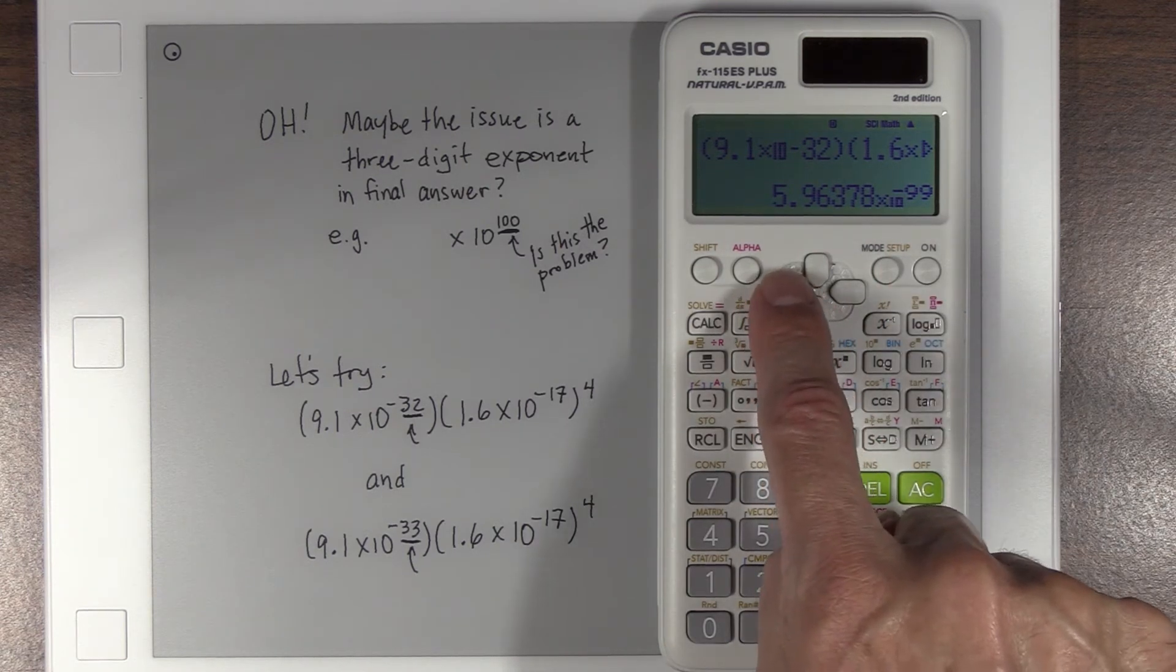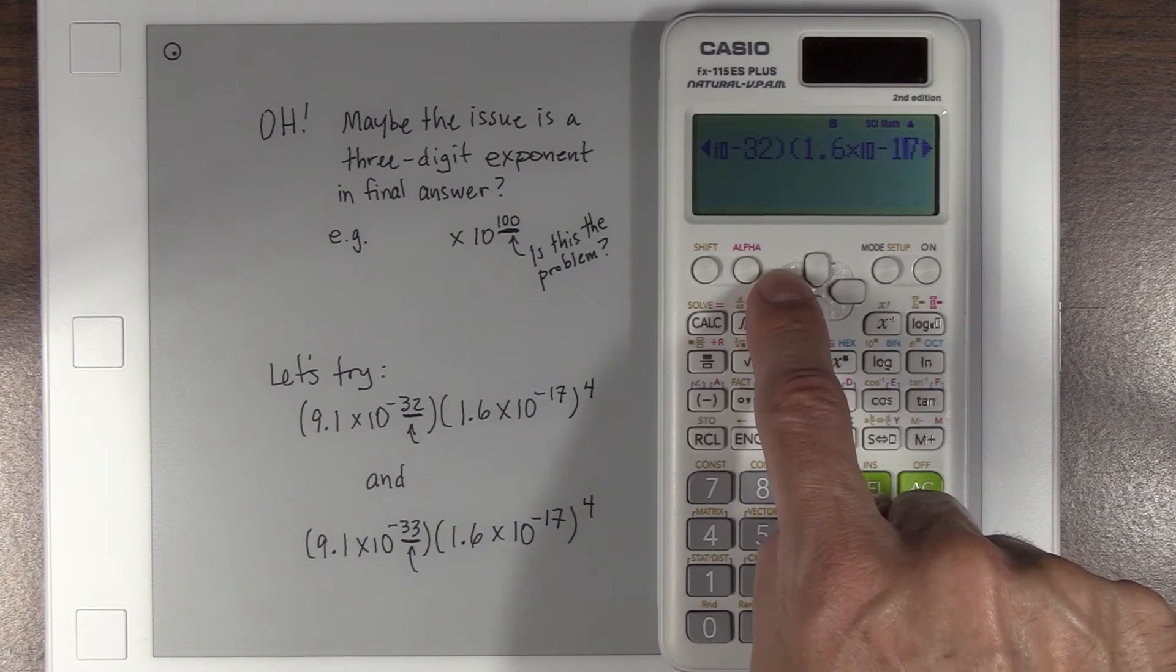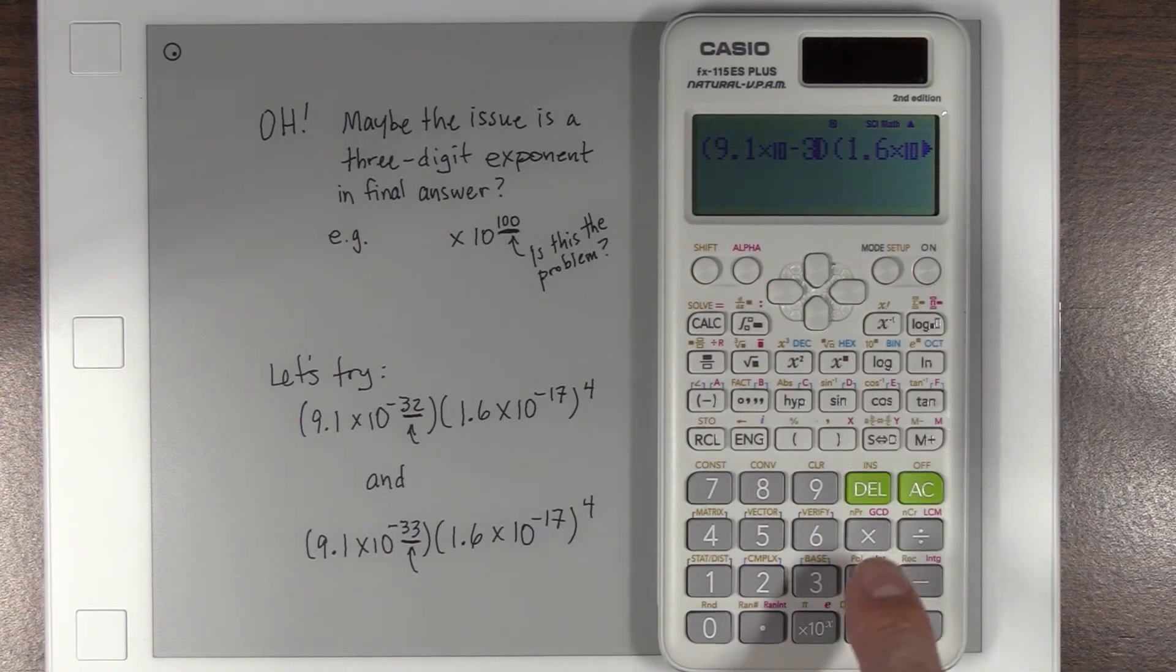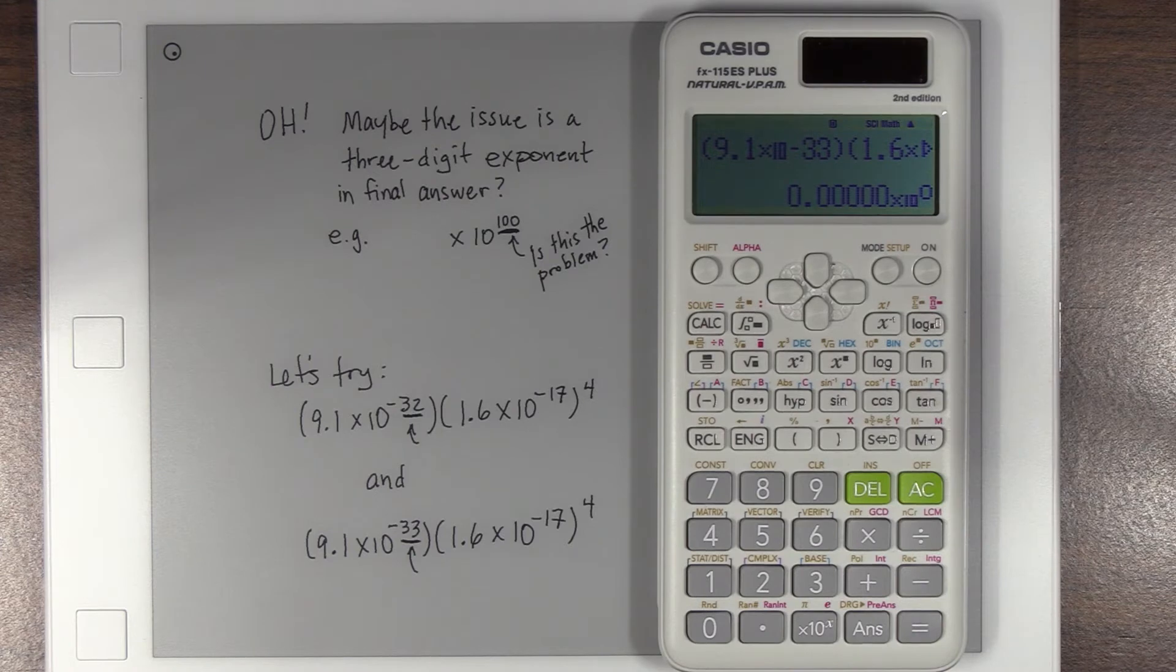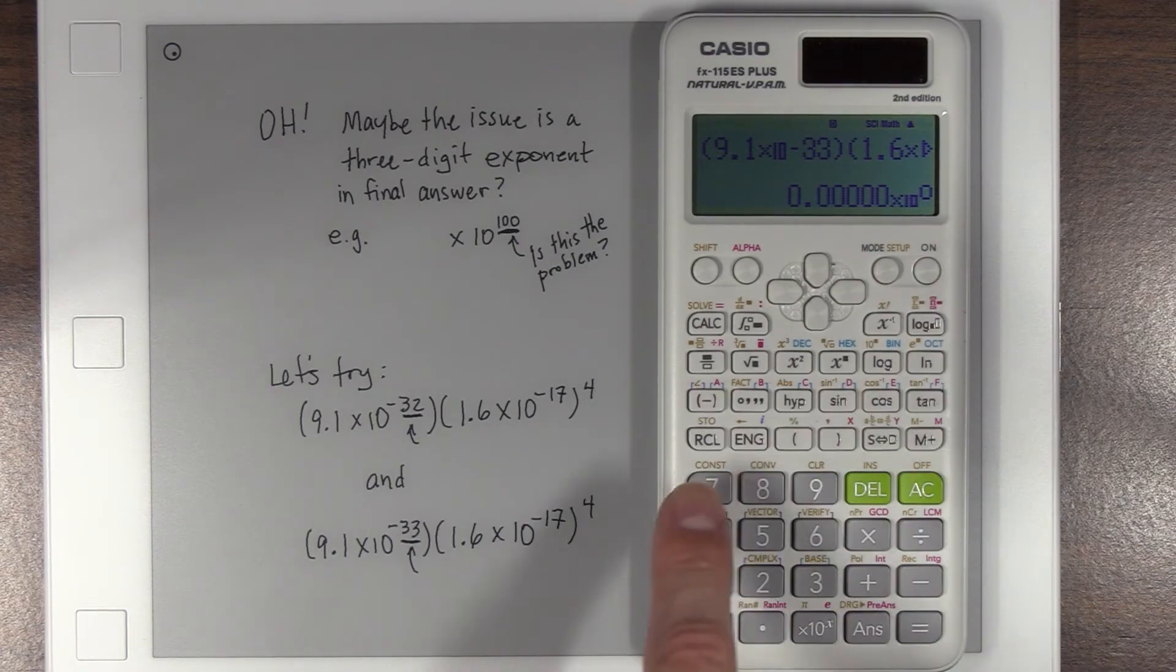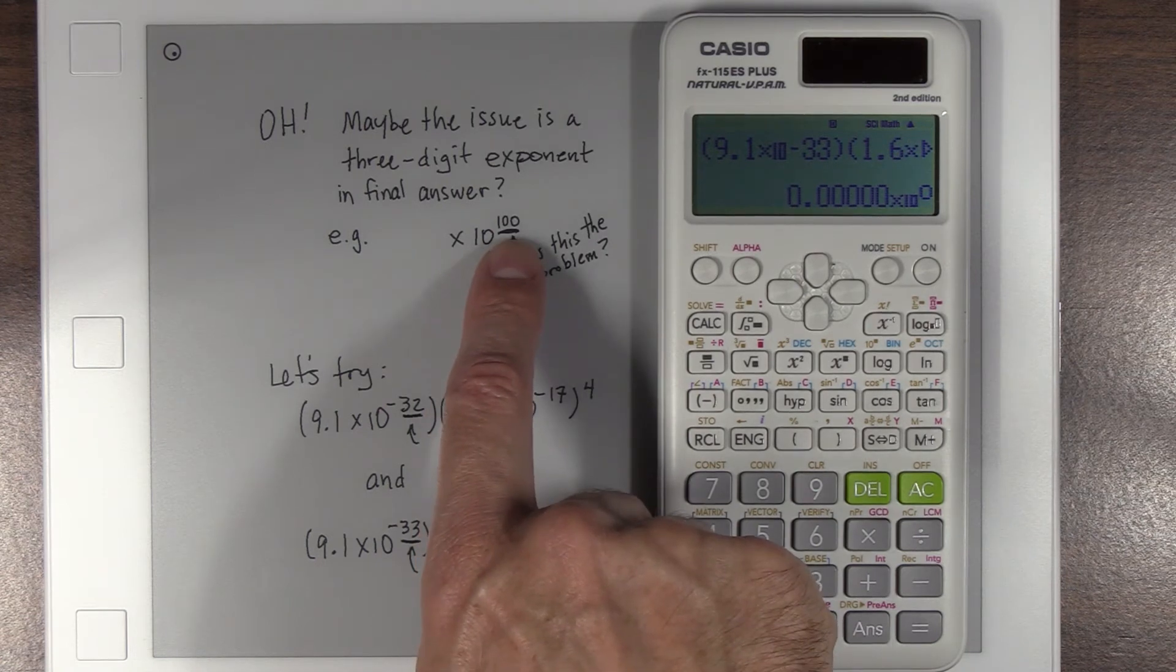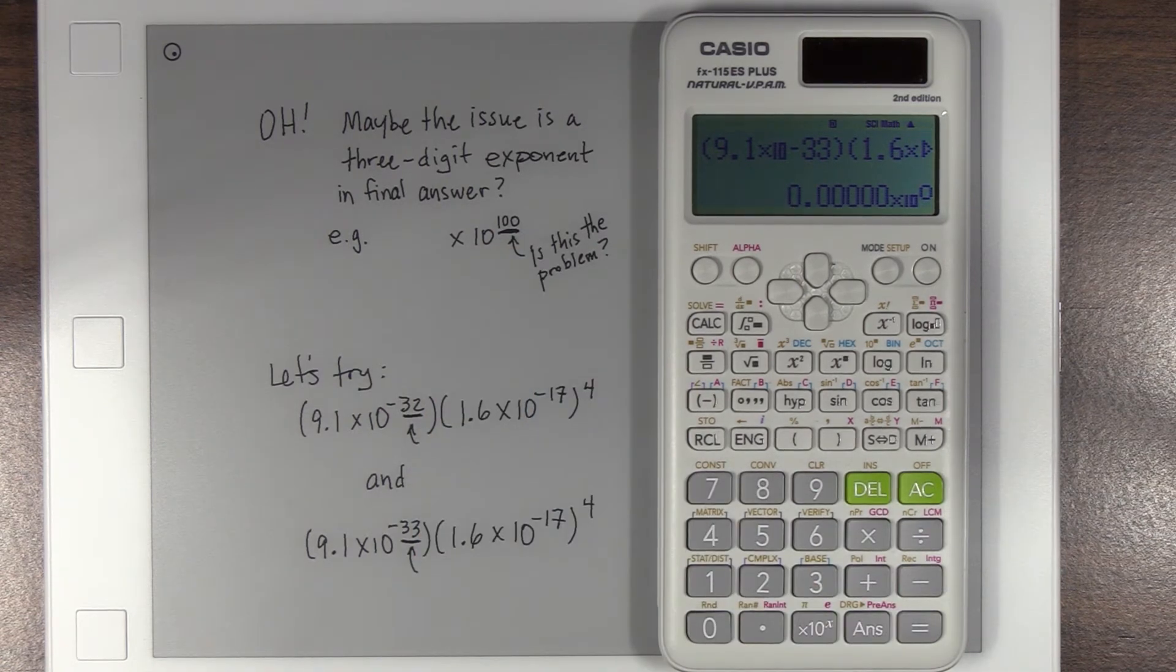And then I thought, well, what if we push it to three-digit territory, negative 100, which is what we would get if we went to 10 to the negative 33. And sure enough, it goes to zero. It does seem that the issue is as soon as you hit the times 10 to the, and then you have a triple-digit, whether it's positive or negative, that's where the calculator runs out of steam.